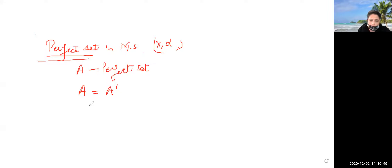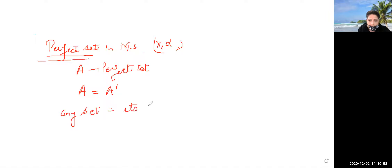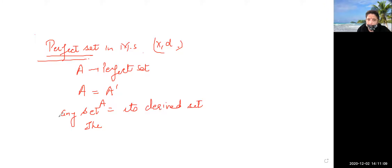When a set is equal to its derived set — that is, any set A is equal to its derived set A-dash — then the set A is called a perfect set.